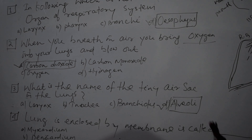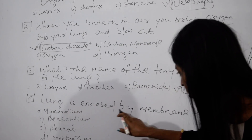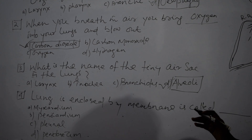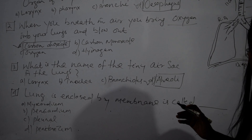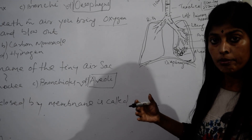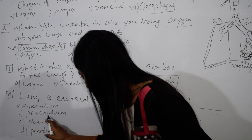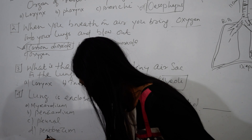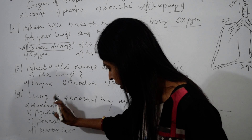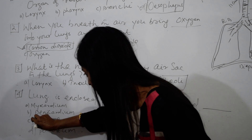The next question: the lungs are enclosed by a membrane called — option one is myocardium, two is pericardium, three is pleura, four is peritoneum. Peritoneum covers the abdomen cavity and is not part of the respiratory system. Myocardium and pericardium are also not correct.